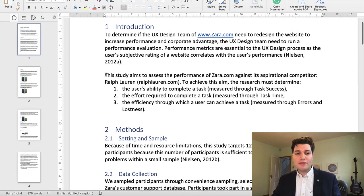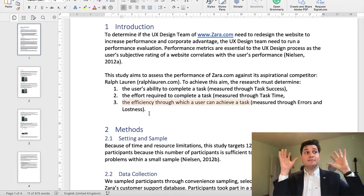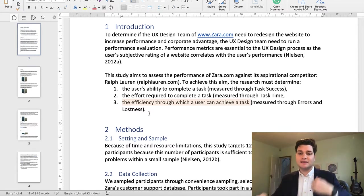Then we talk about the aim. So the aim is to assess the performance of Zara.com against its aspirational competitor, Ralph Lauren. To achieve this aim, the researcher must determine the ability to complete a task, so task success, the effort required to complete a task, task time, and the efficiency through which a user can achieve a task, errors and lostness. So I'm saying these are the ways. There's a big thing up there. I've got to achieve it somehow, break it down into parts, and here's the parts.